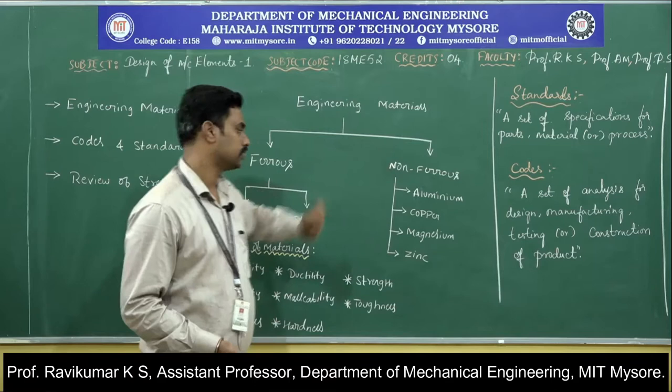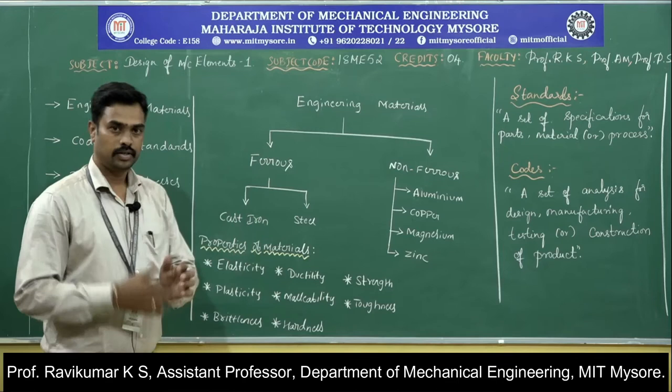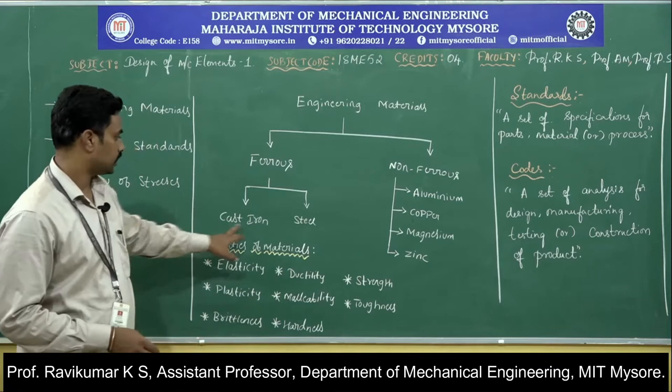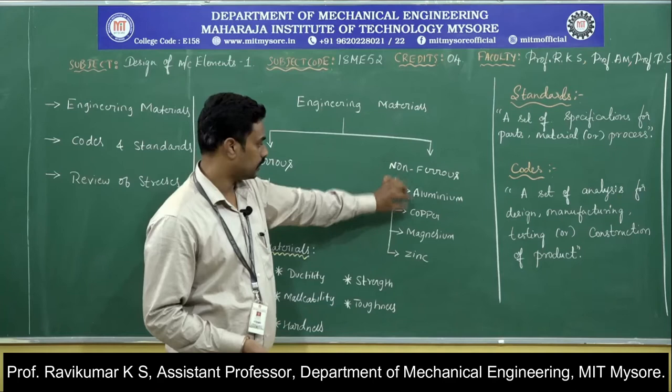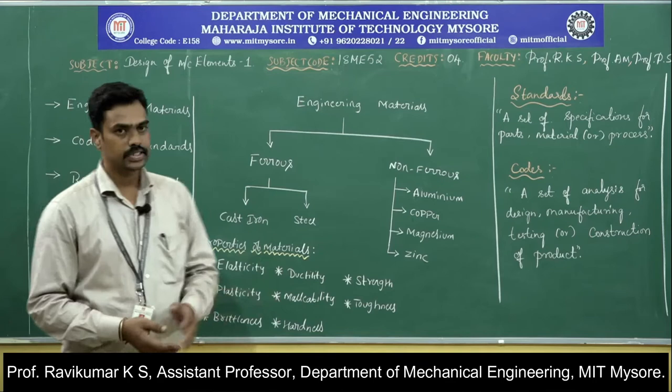Under ferrous, we have sub-classifications that depend on the composition of iron as well as carbon: cast iron and steel. Under non-ferrous, we have many materials. For classification, four are taken: aluminum, copper, magnesium, and zinc.